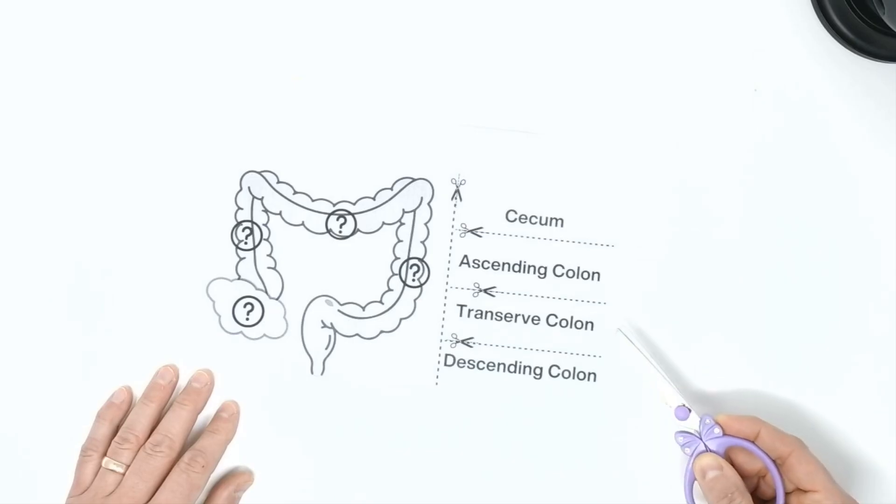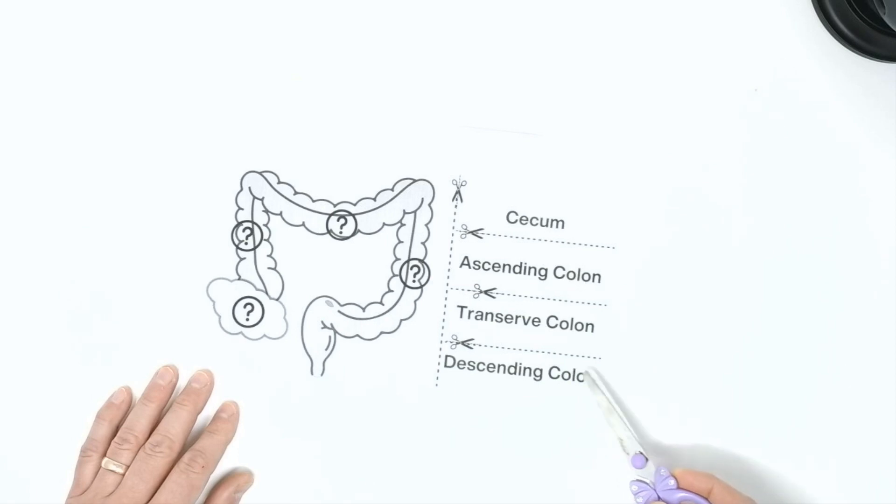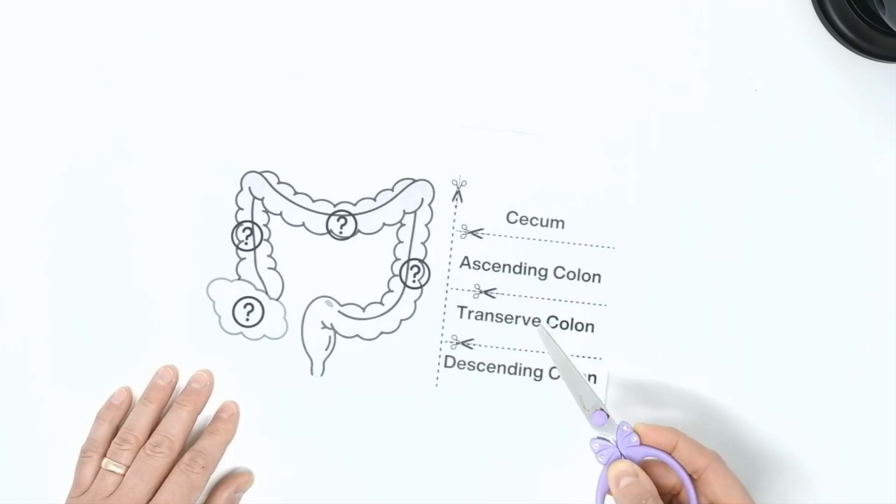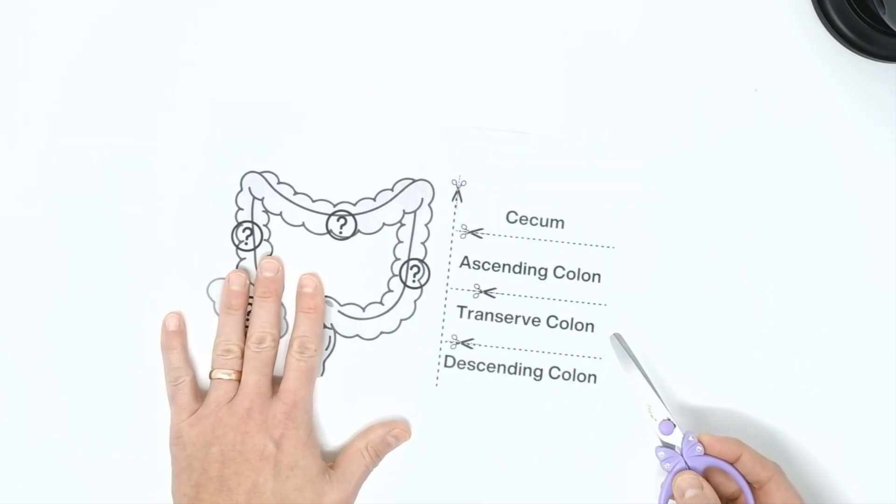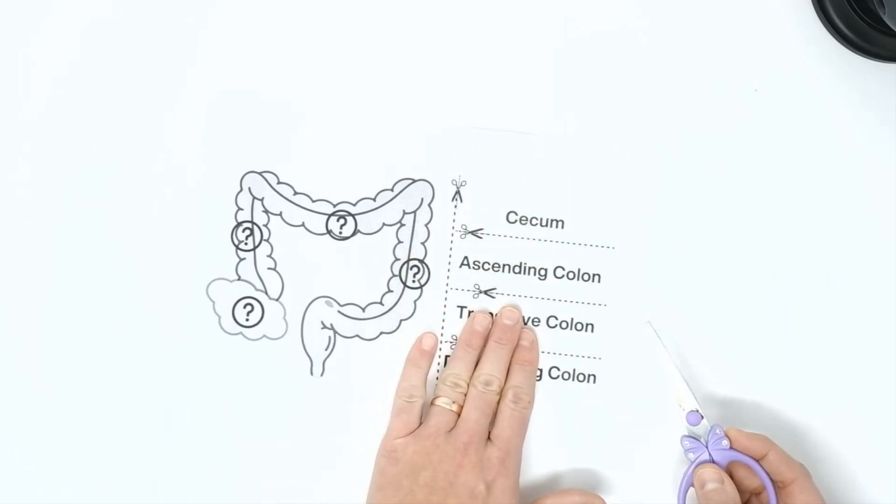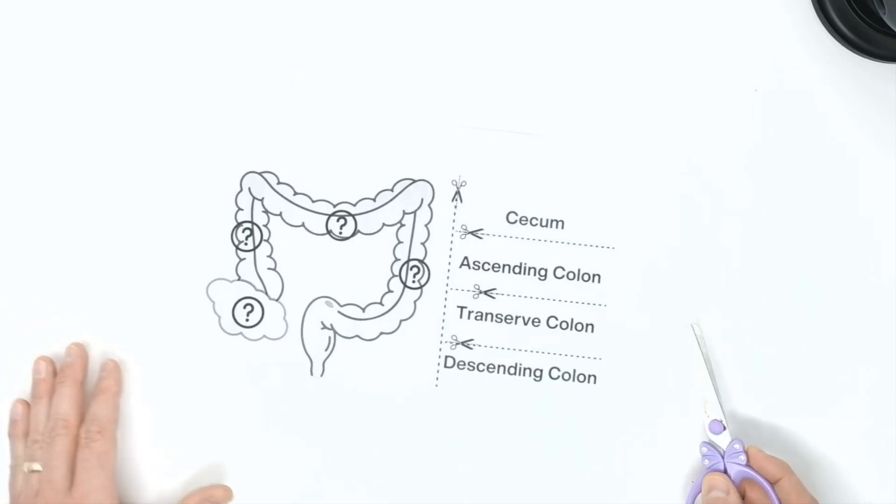What we're going to do today is we're going to cut out our terms, mix them up, and then place them on the question marks for where they belong. If you have a printer, pause and print this off. If you don't have a printer, that's fine too. You can definitely still participate and call out what you think goes on which question mark.